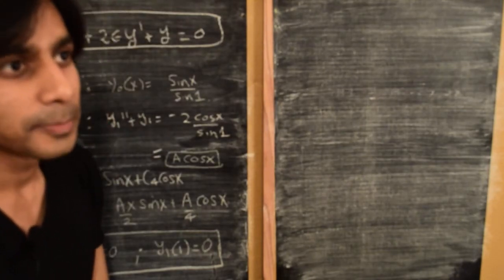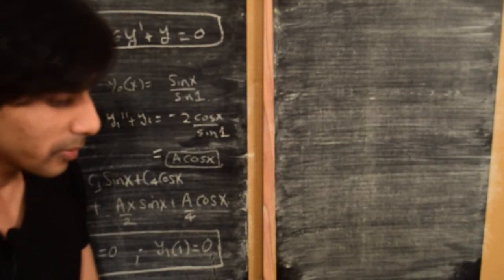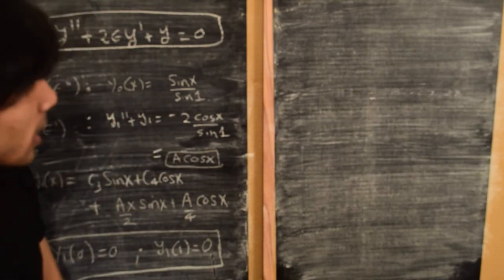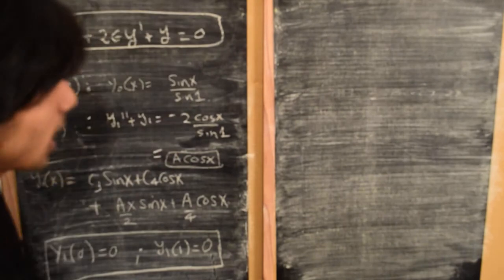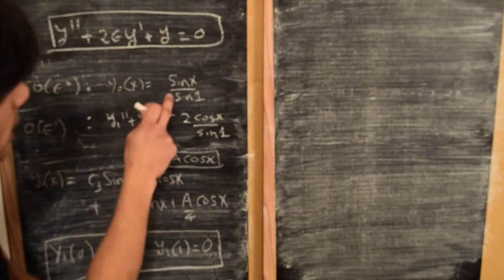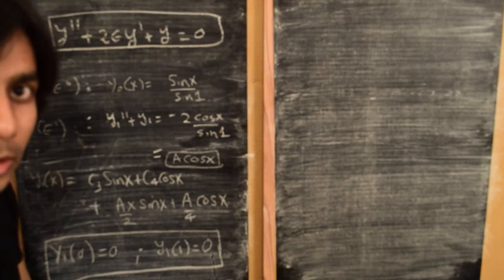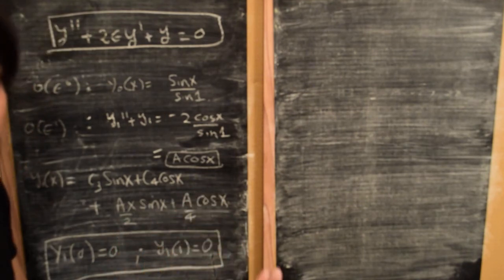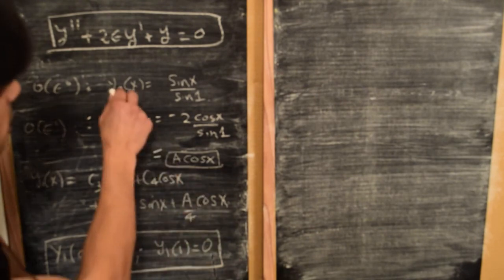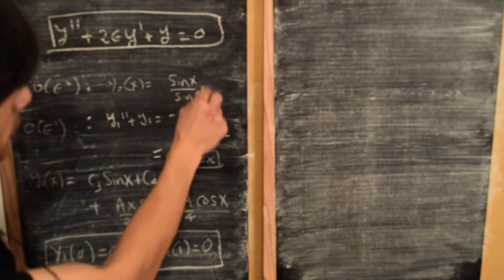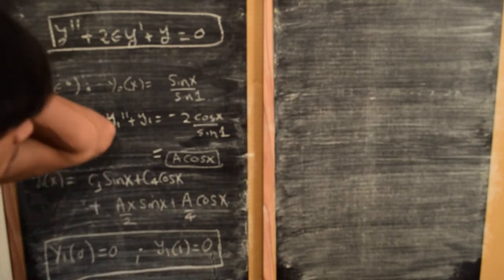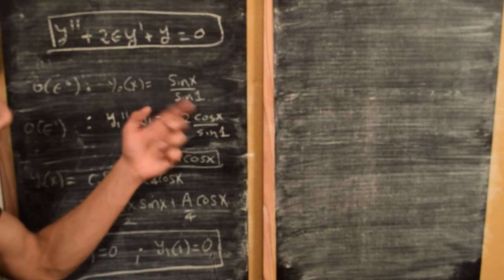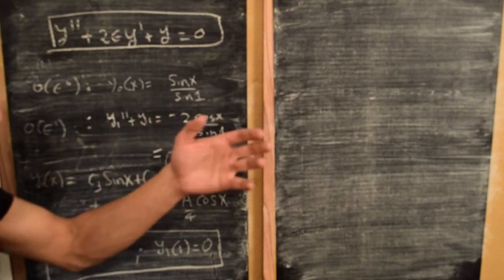Welcome back. In the previous two parts, we have been solving a differential equation using regular perturbation methods. As a recap, we found the zeroth-order solution, assuming an expansion of y to leading order in epsilon — that is, a solution of the form y_0 plus epsilon times y_1. We found the zeroth-order solution as sin(x) divided by sin(1), subject to the boundary conditions y_0(0) = 0 and y_0(1) = 1.